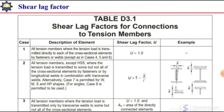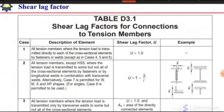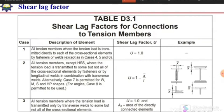The shear lag factor for connections to tension members: the first case is all tension members where the tension load is transmitted directly to each of the cross-sectional members by fasteners or weld. In that case, U is equal to 1. For example, with an angle section, if both legs are connected, or with a W section if both the flange and web are connected, then U equals 1, meaning the whole member has equal stress at the section.